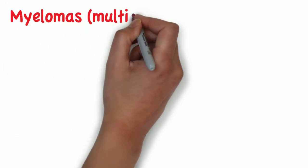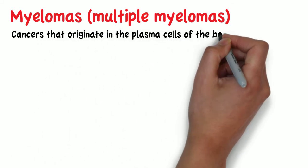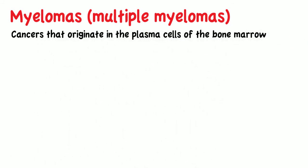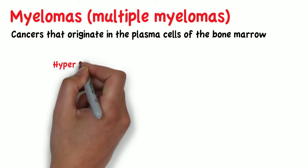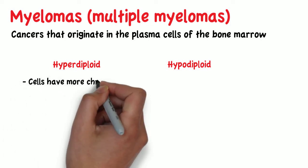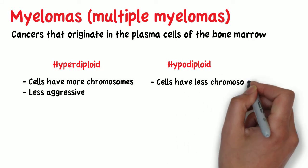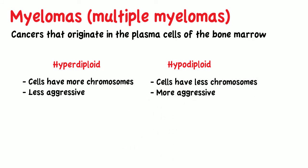Next, we have myelomas, also called multiple myelomas, which are cancers that originate in the plasma cells of the bone marrow. There are two main types of myelomas: hyperdiploid and hypodiploid. In hyperdiploid myelomas, cells have more chromosomes than normal and this type is less aggressive. In hypodiploid myelomas, cells have fewer chromosomes than normal and it is more aggressive.